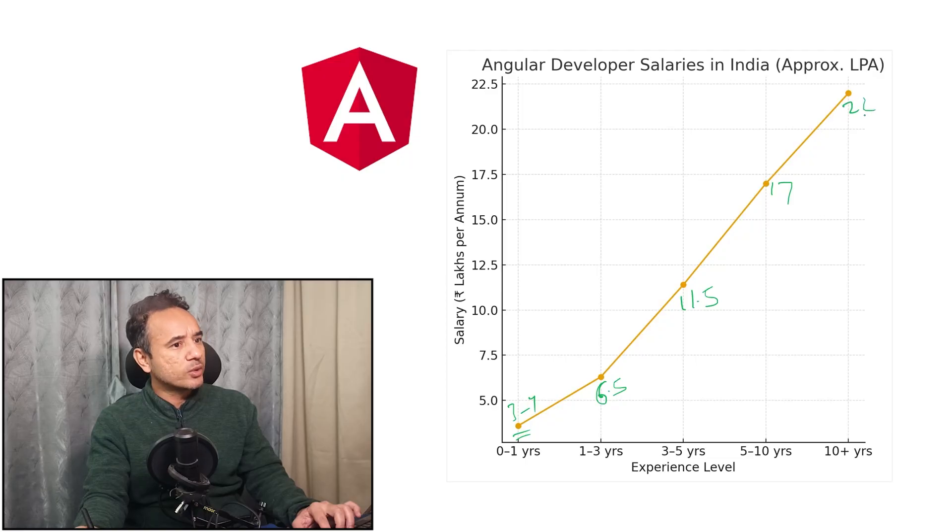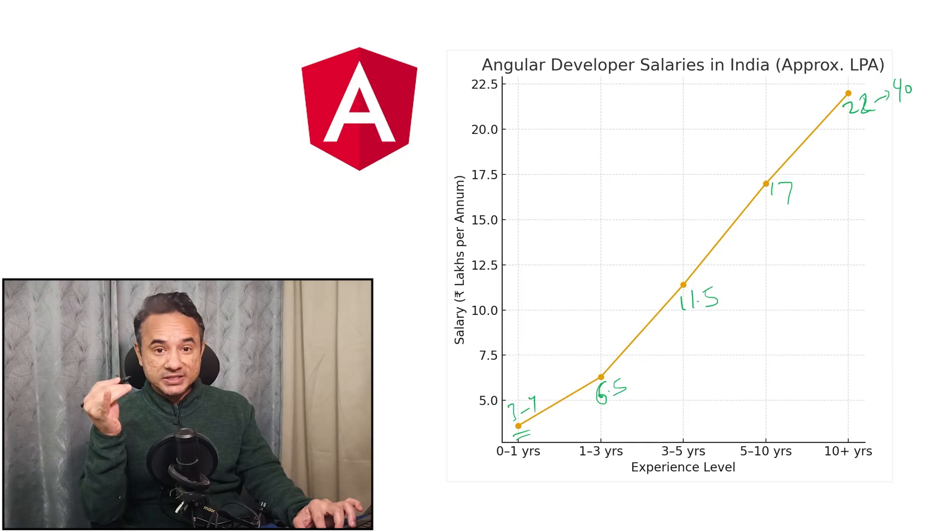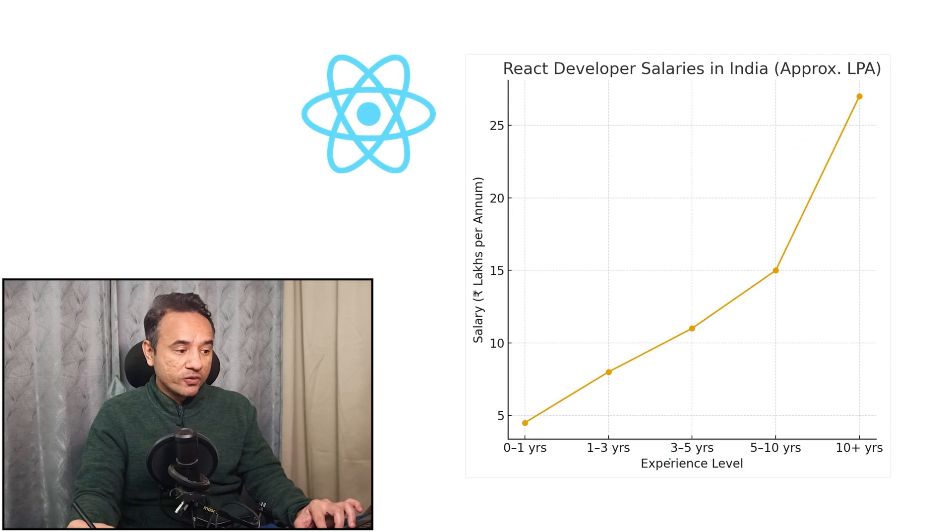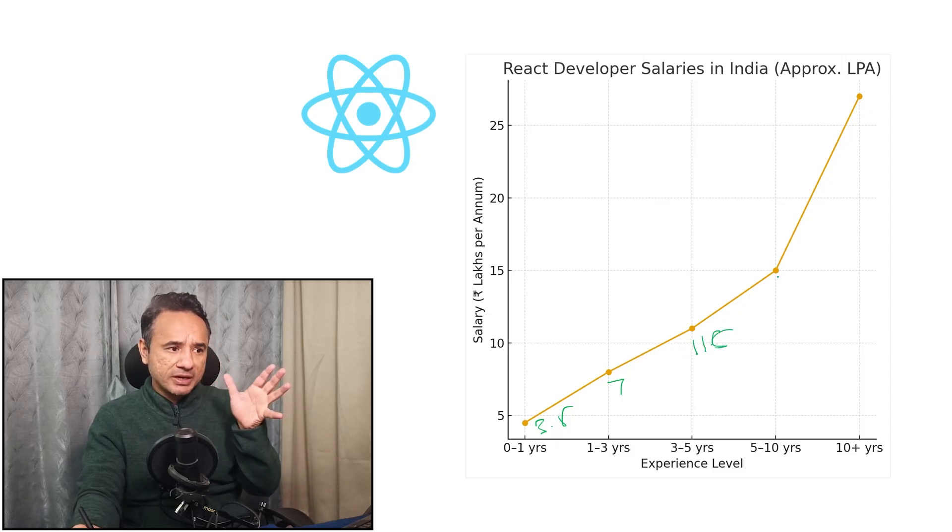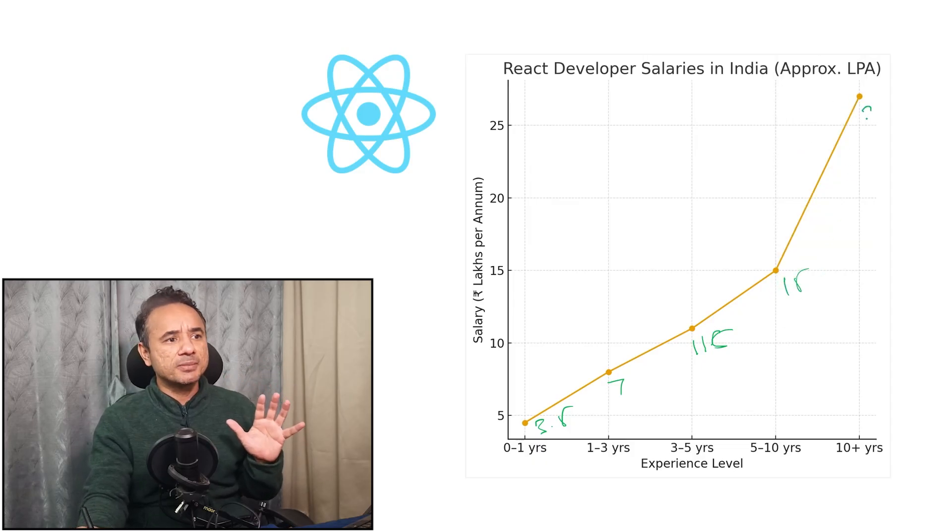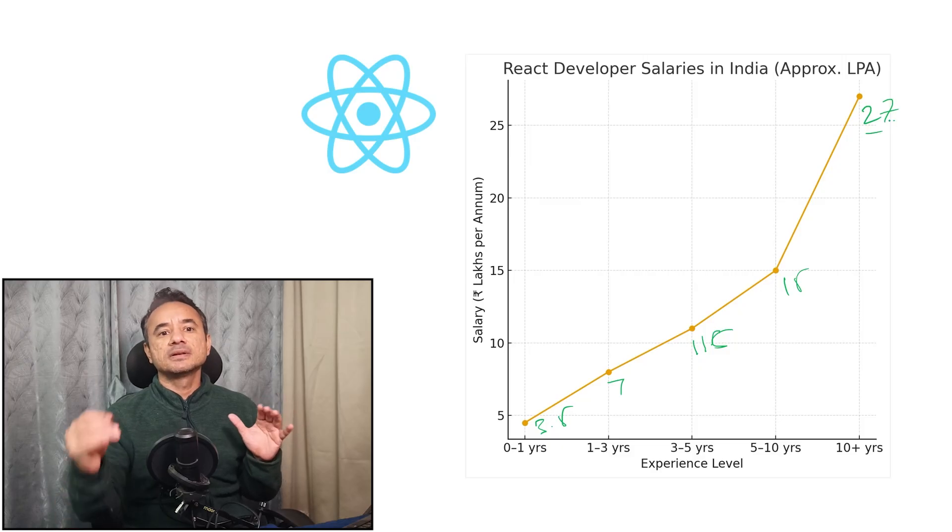Five to ten experience will get 17, and 10 plus years will get around starting 22, and that can go up to 40 LPA. Now let's check the same for React salaries. A React developer from zero to one years experience will get around 3.5, then one to three experience 7, then three to five experience will get around 11.5, five to ten will get around 15, and the 10 plus experience 27 start.